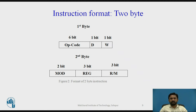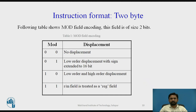The REG field indicates the name of the register that is the source or destination. The R/M field indicates whether the source or destination operand is located in a register or memory. In the second byte, the two MSBs are defined as the MOD field. The MOD field defines whether the R/M field refers to a register or memory, and if memory, whether there is no displacement, an 8-bit displacement, or a 16-bit displacement.